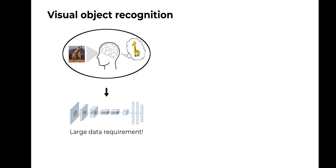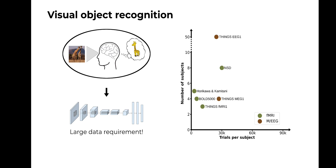However, state-of-the-art models require massive amounts of data to properly train. Just think of the ImageNet competition where models are trained on more than one million images. On the other hand, brain datasets are typically three orders of magnitude smaller. To bridge this gap, recently there have been large-scale data collection efforts with both fMRI and MEG.